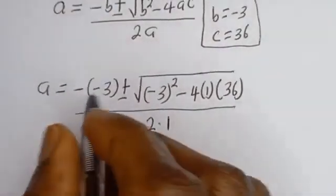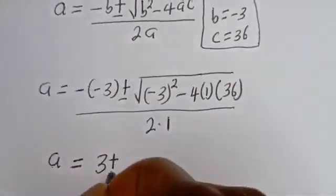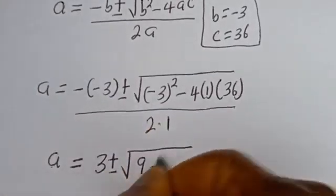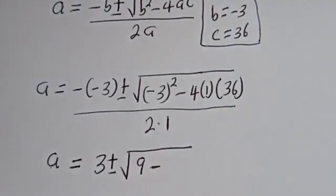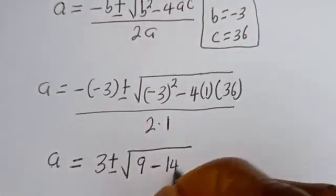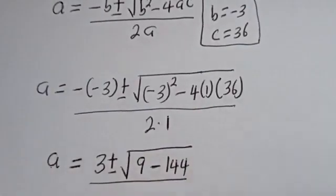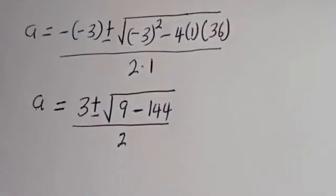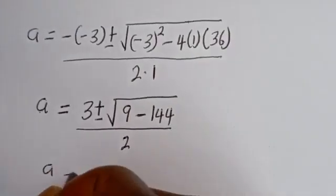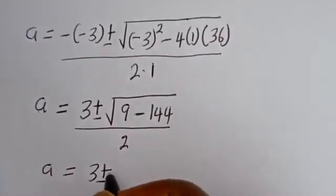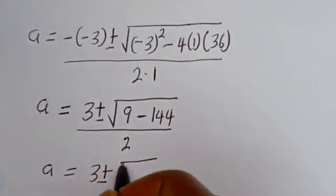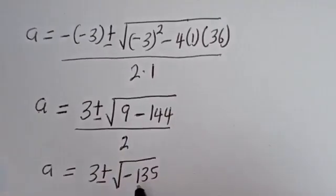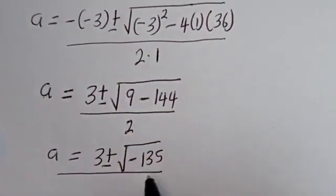Then a is equal to minus (minus 3), which is 3, plus or minus the square root of (minus 3) squared, which is 9, minus 4 times 1 times 36, that is 144, then divided by 2 times 1. So a is equal to 3 plus or minus the square root of 9 minus 144, which is minus 135, divided by 2.